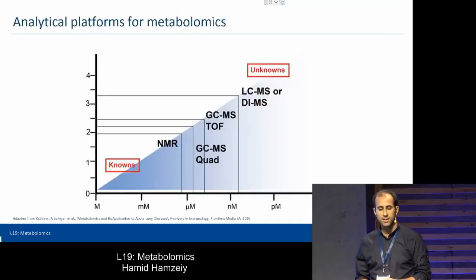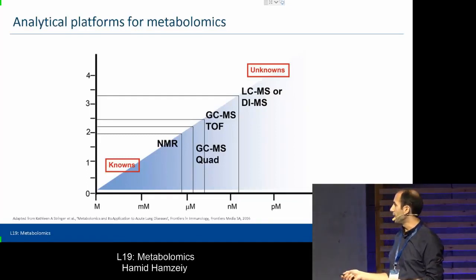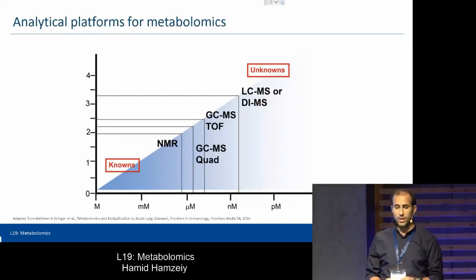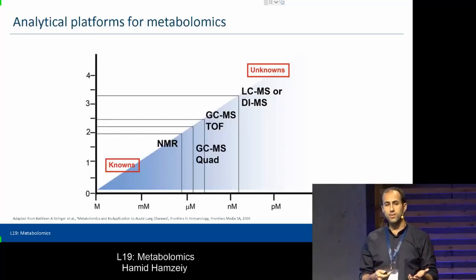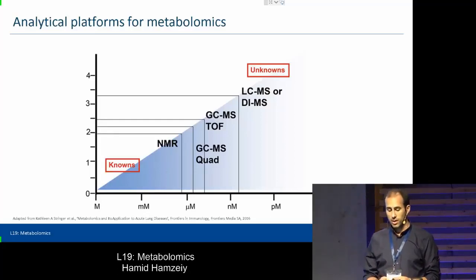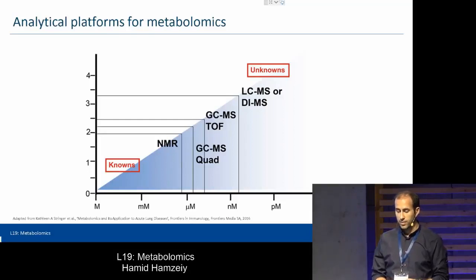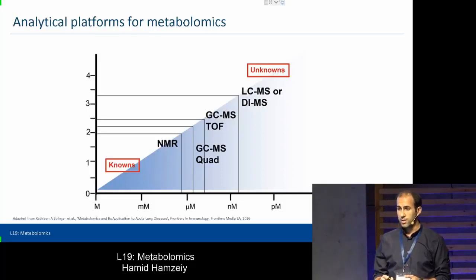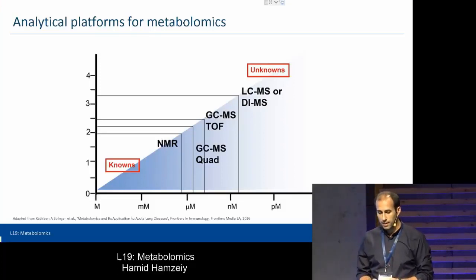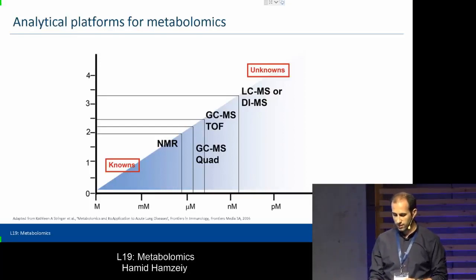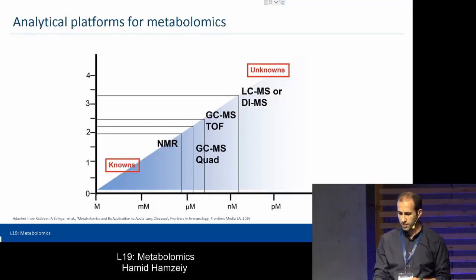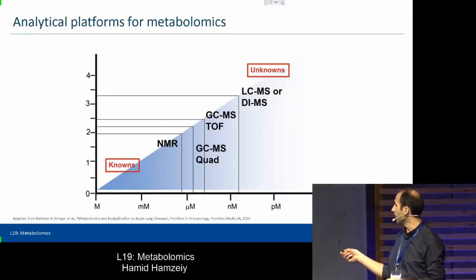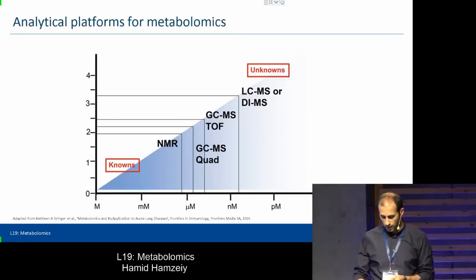There are several different analytical platforms for metabolomics, ranging from NMR to LC-MS. With NMR, you're very good at identifying and detecting known metabolites. With LC-MS, you have the chance to identify metabolites that are novel and not yet known. At the lower end we have lower sensitivity and detection limit, and as we go up the graph we get higher sensitivity in the instruments.